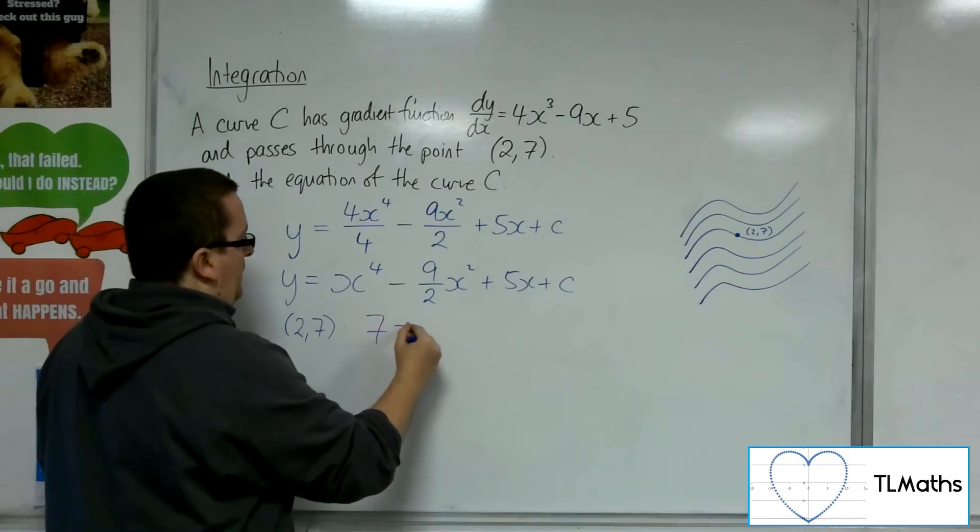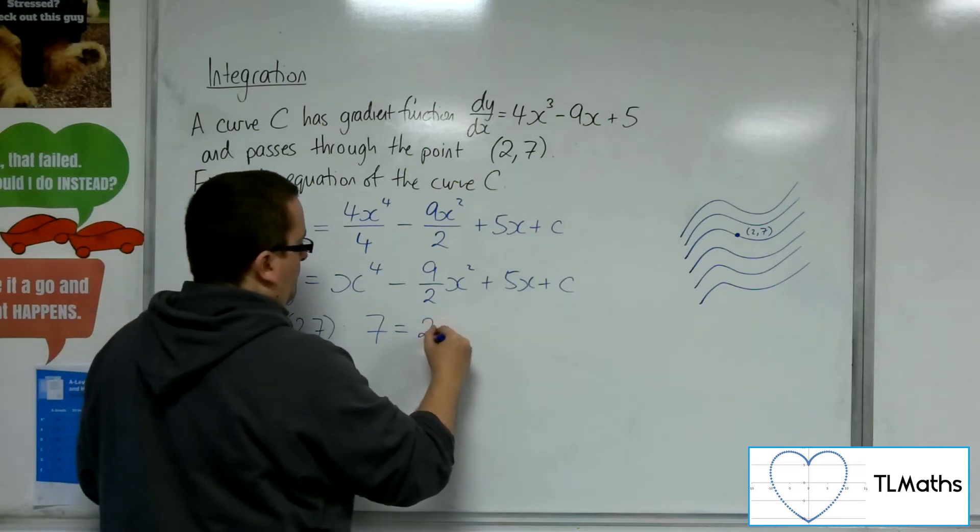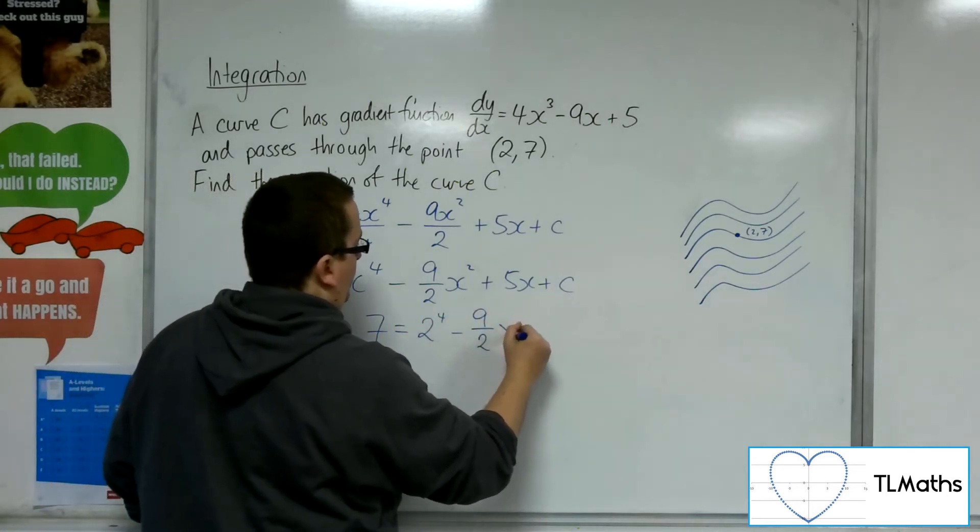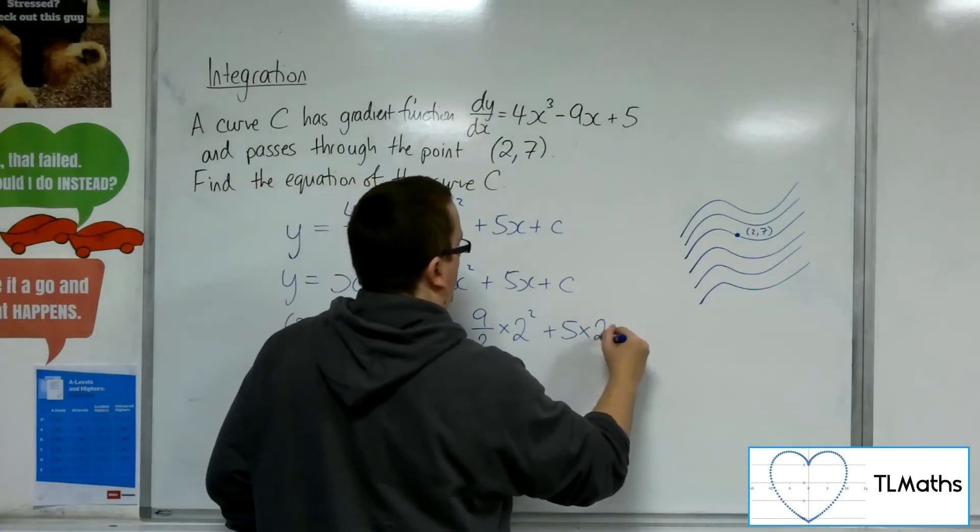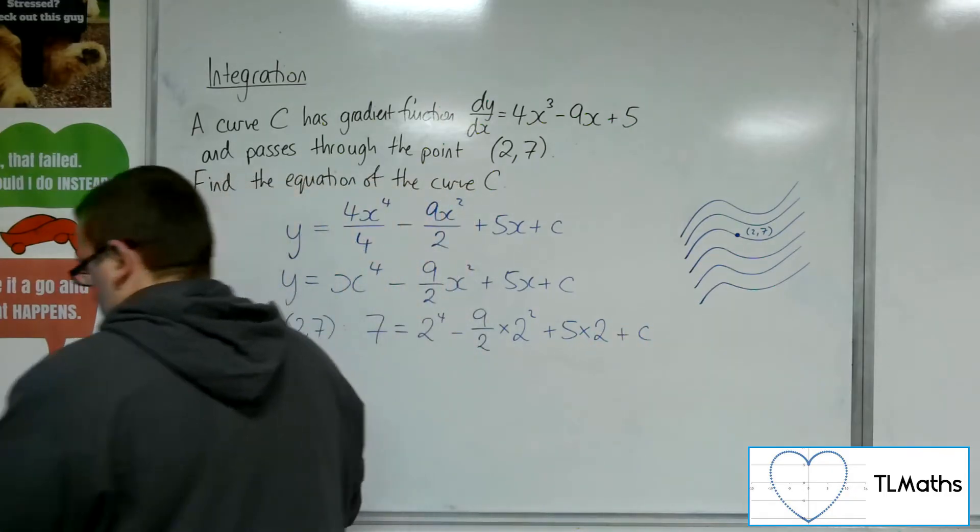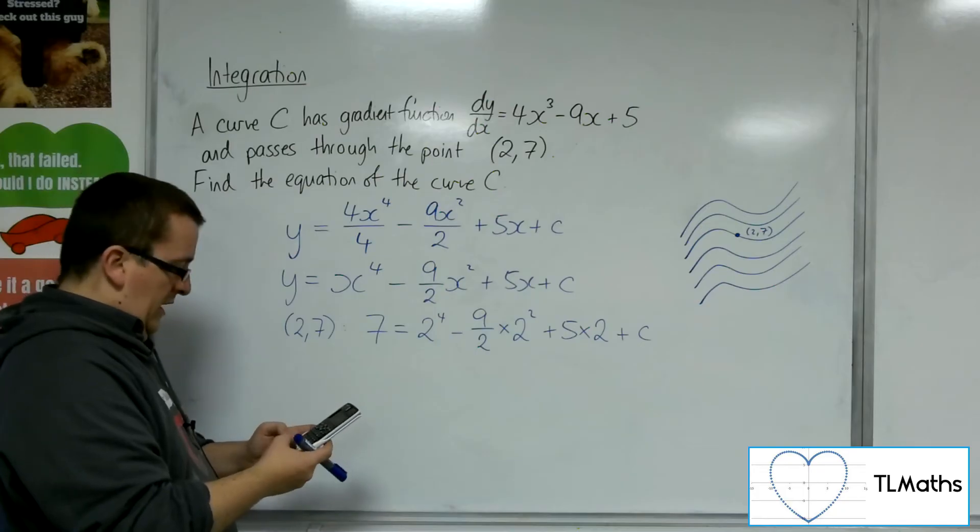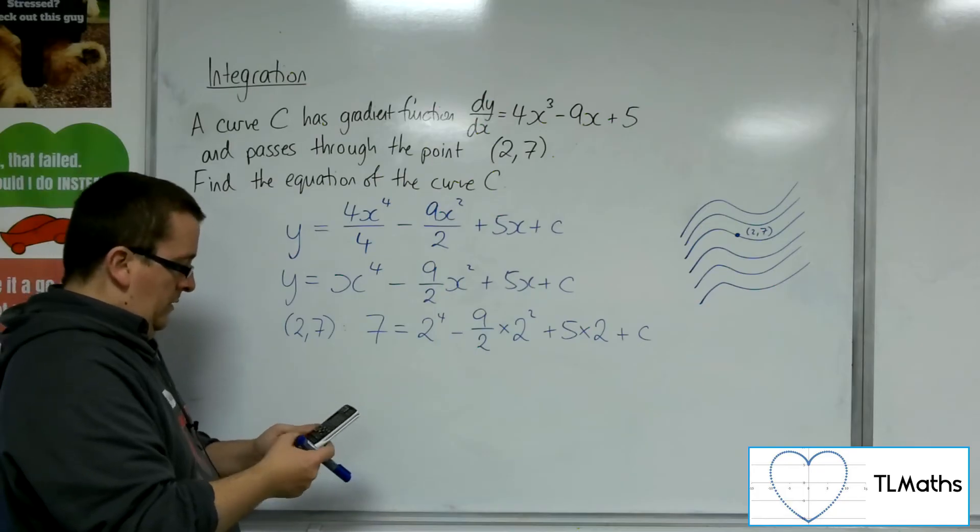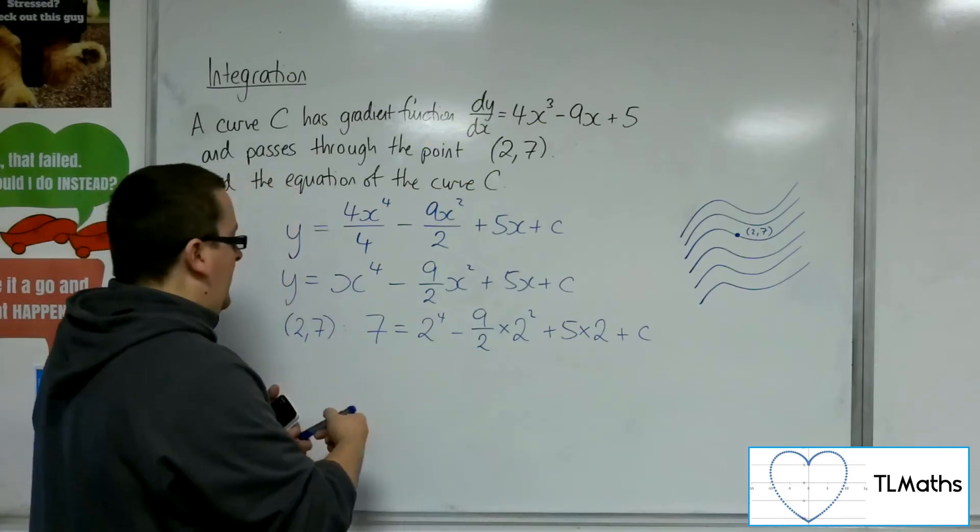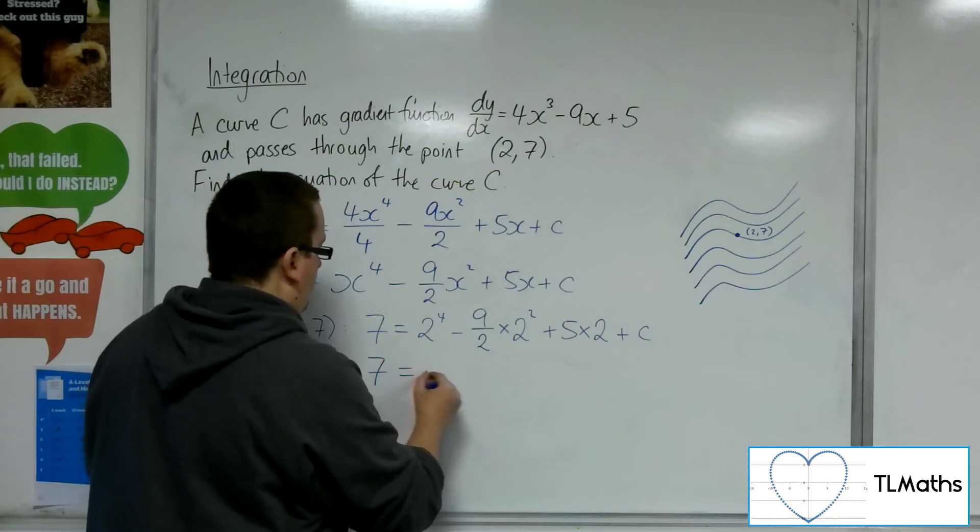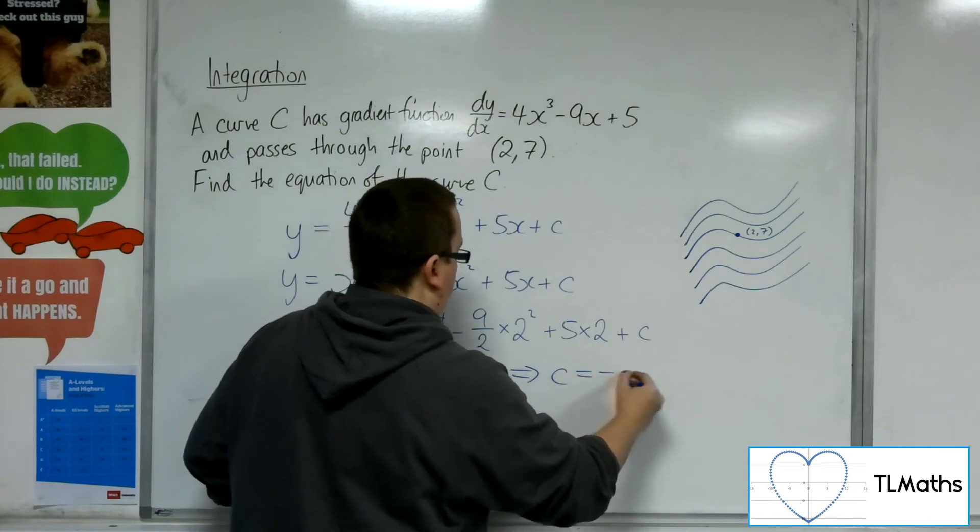So the y is 7, the x is 2. So we've got 2⁴, take away 9/2 of 2², plus 5 lots of 2, plus C. Okay, so we've got 2⁴, take away 9/2 times 2², plus 5 lots of 2, which is 8. So that means we've got 7 equals 8 plus C. So C must be minus 1.